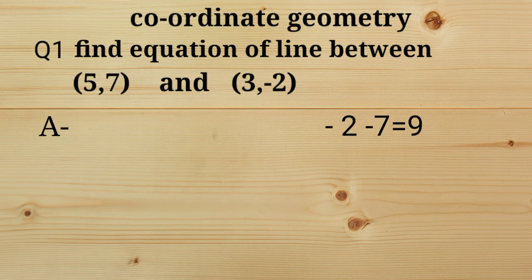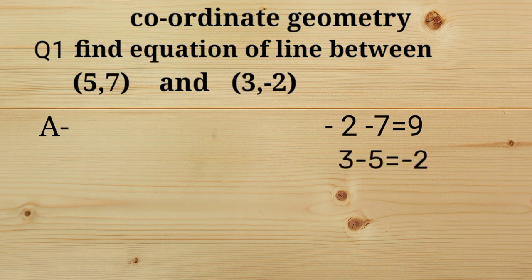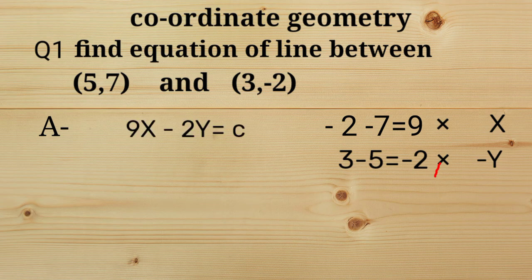Simply write down difference in y coordinate: minus 2 minus 7 equals minus 9. Similarly find difference in x coordinate: 3 minus 5 equals minus 2. Now multiply difference of y by x and x by minus y and add. We get 9x minus 2y equals c.